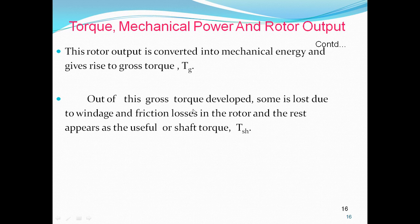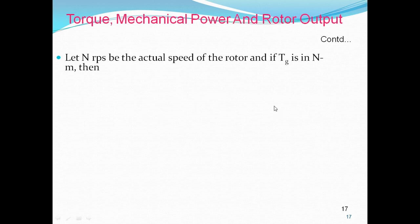Out of the gross torque developed, some is lost due to friction and windage losses in the rotor. The remaining power appears at the shaft as useful shaft torque TSH. So from gross torque TG, if we remove the torque due to friction and windage losses, we get shaft torque TSH — the torque available at the shaft.